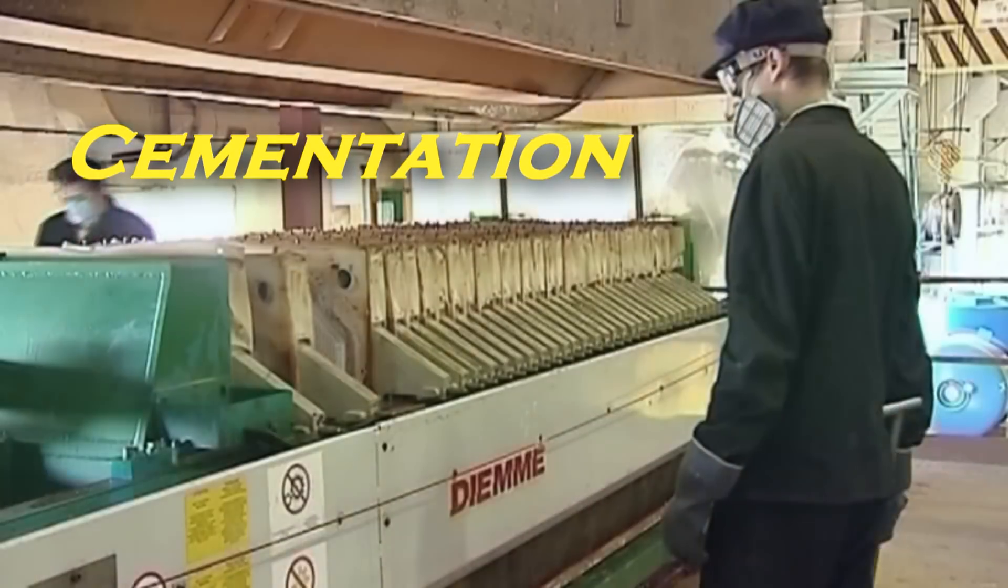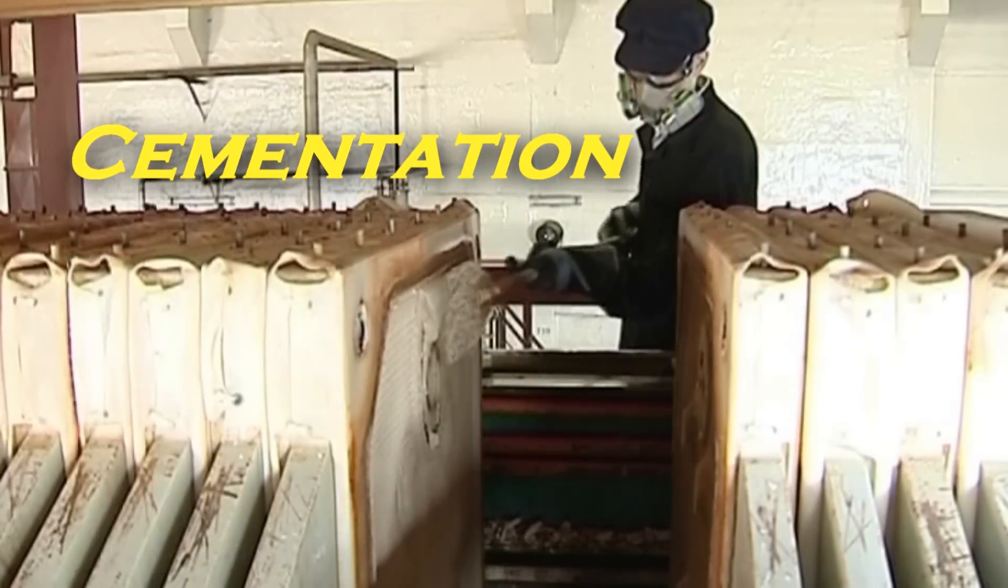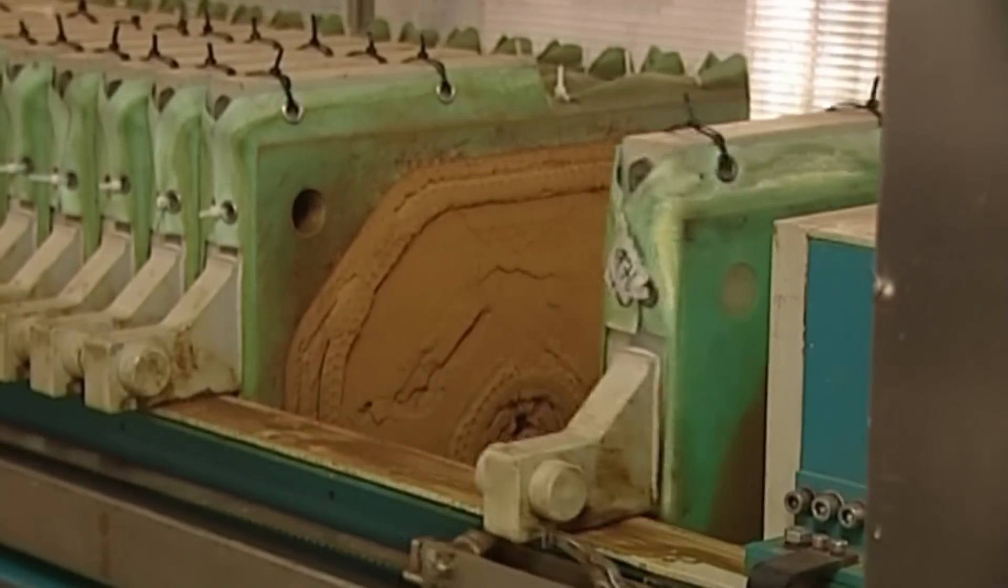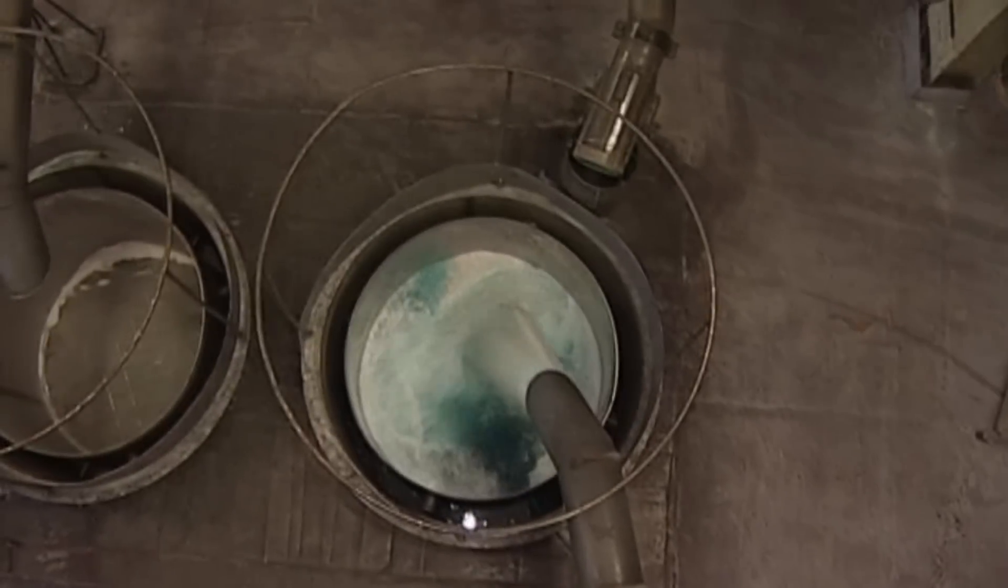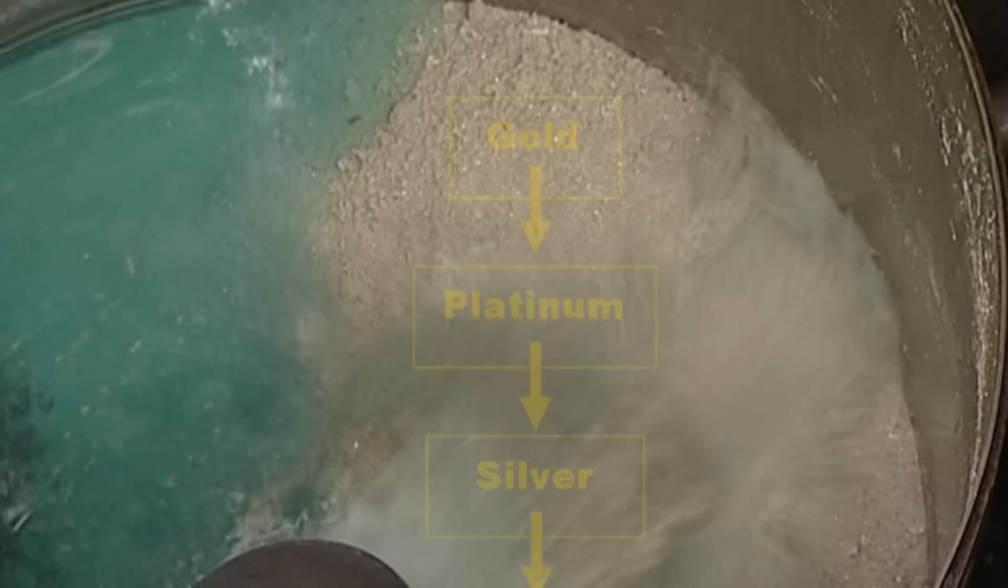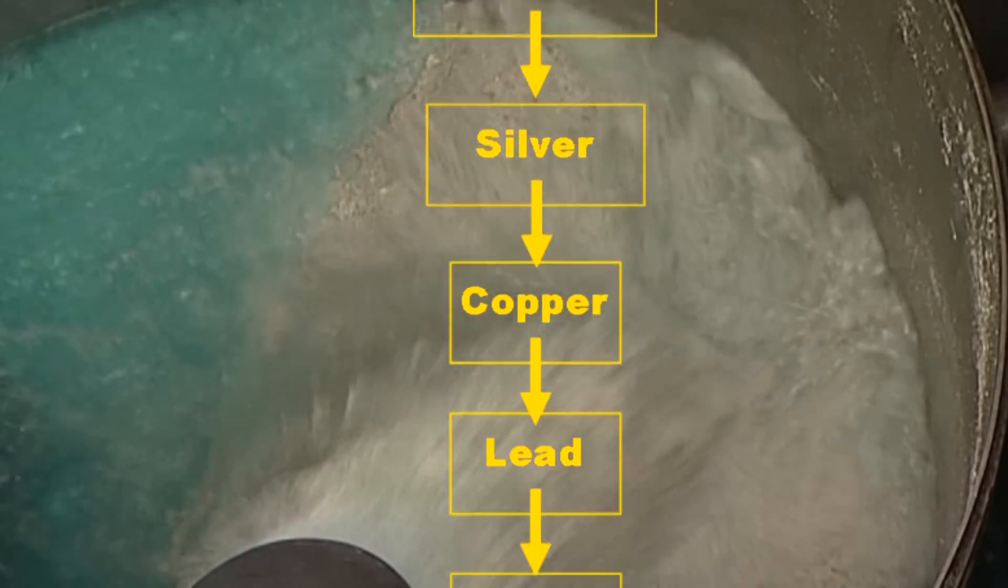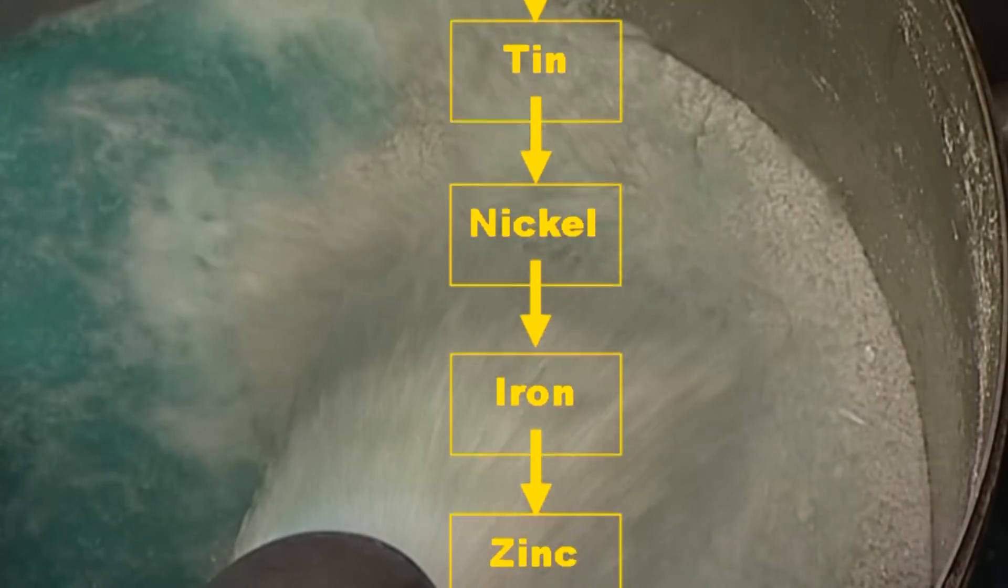Cementation is the most straightforward process used. It is a precipitation process in which metal ions are reduced to their metallic form by taking electrons back from other metals. Metals can be lined up in the order in which they will take electrons from each other.